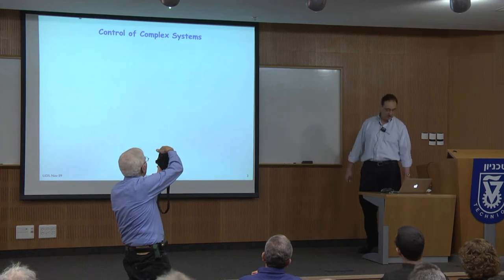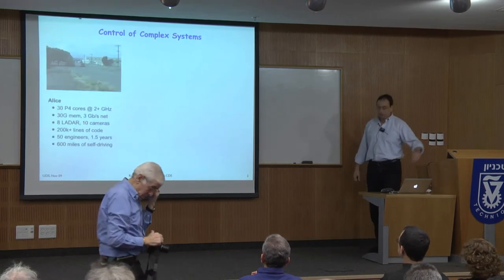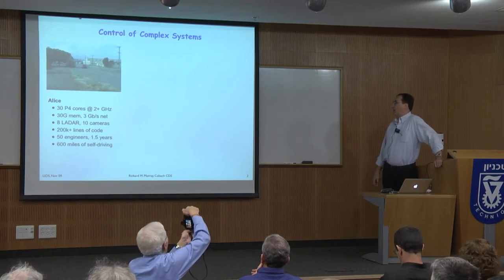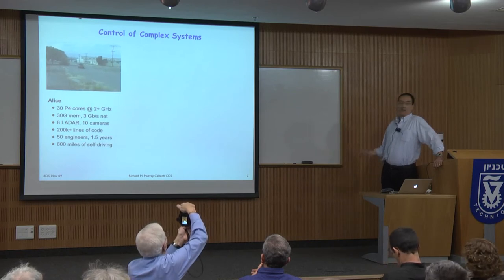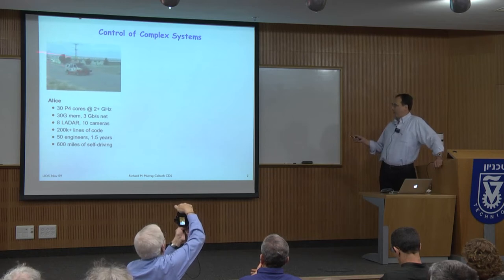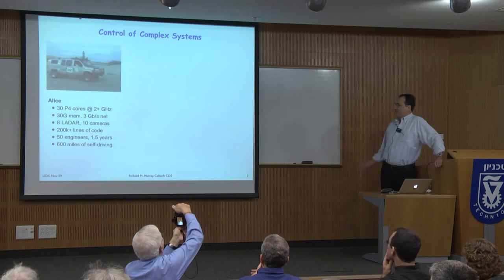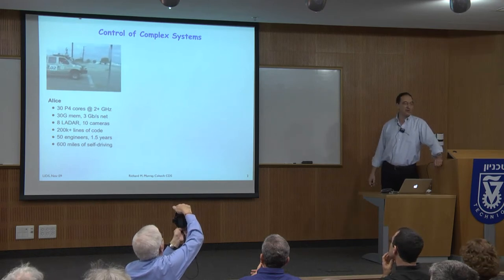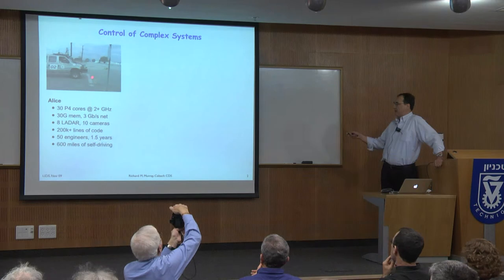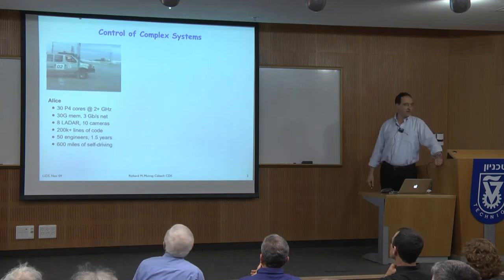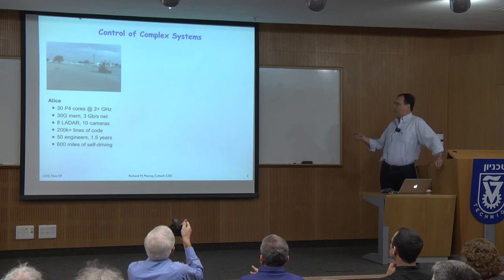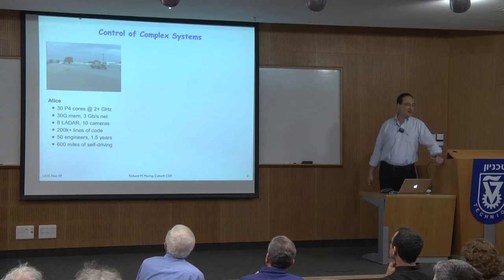The type of system I've traditionally looked at is something like this autonomous vehicle, built by Caltech undergraduates over about a year and a half. We call it Alice — a very large van packed with many computers. On the front you see cameras, laser range finders, and other sensors. People are inside but they're not driving; they're just monitoring, with a hand over a big red button in case it does something unexpected.